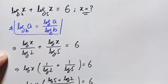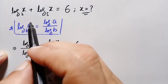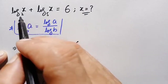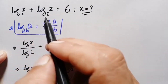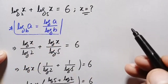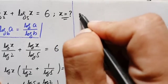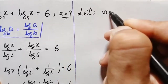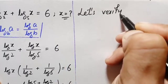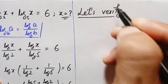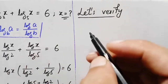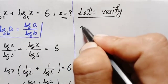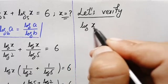Now we will verify that x equals 5 raised to the power 6 times log of 2 is the correct value. We substitute back into the original problem: log of x with base 2 plus log of x with base 5 equals 6, replacing x with 5 raised to power 6 times log of 2.